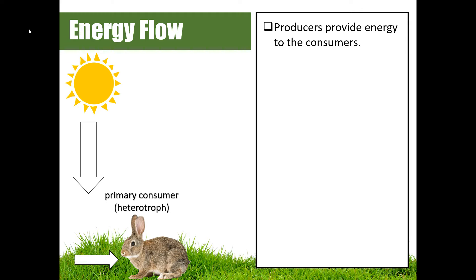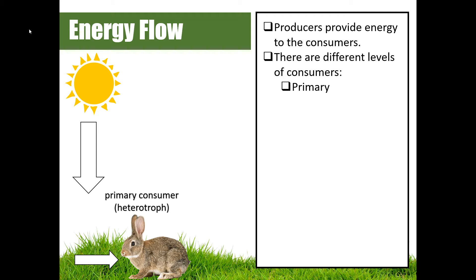Producers are going to provide energy to what we call the consumers. Here we have the rabbit that's going to eat the grass, so the rabbit is known as a primary consumer. We also call consumers heterotrophs because they can't make their own food — they have to rely on and consume other organisms to get the energy they need to power their cellular processes. Here on the screen we see a primary consumer.